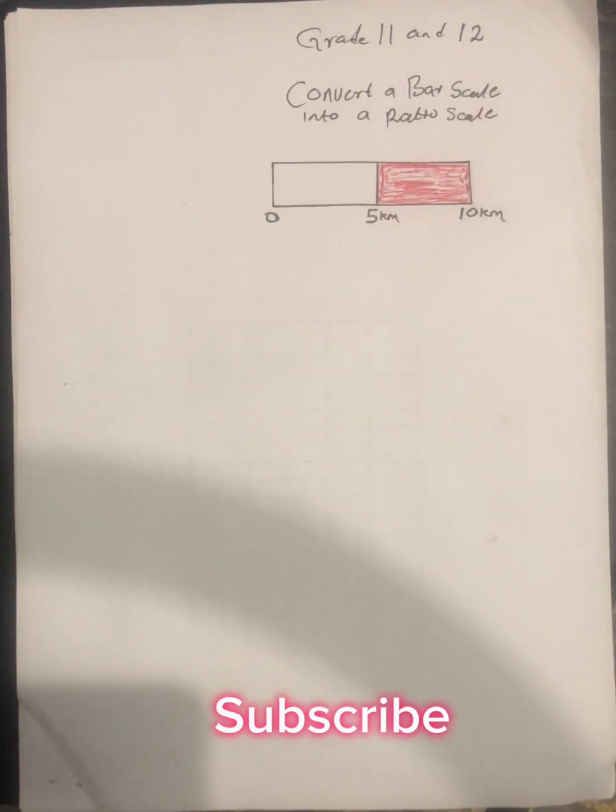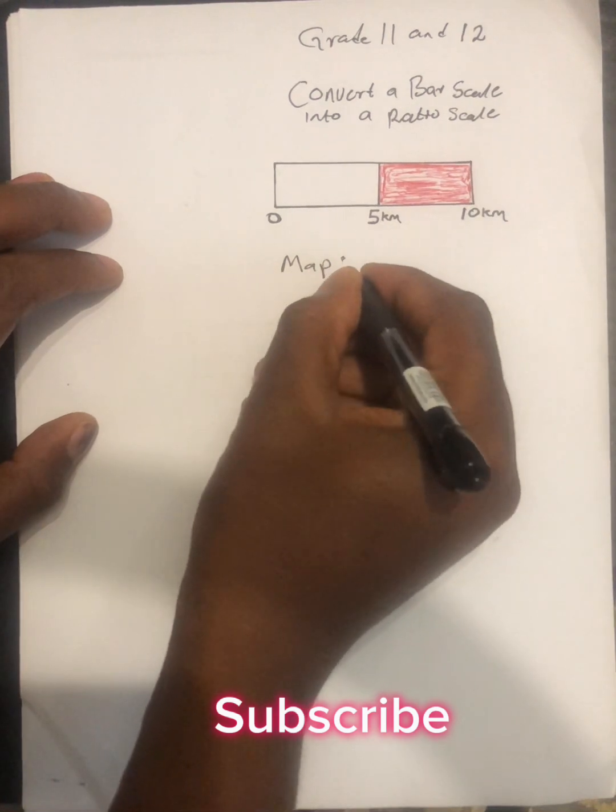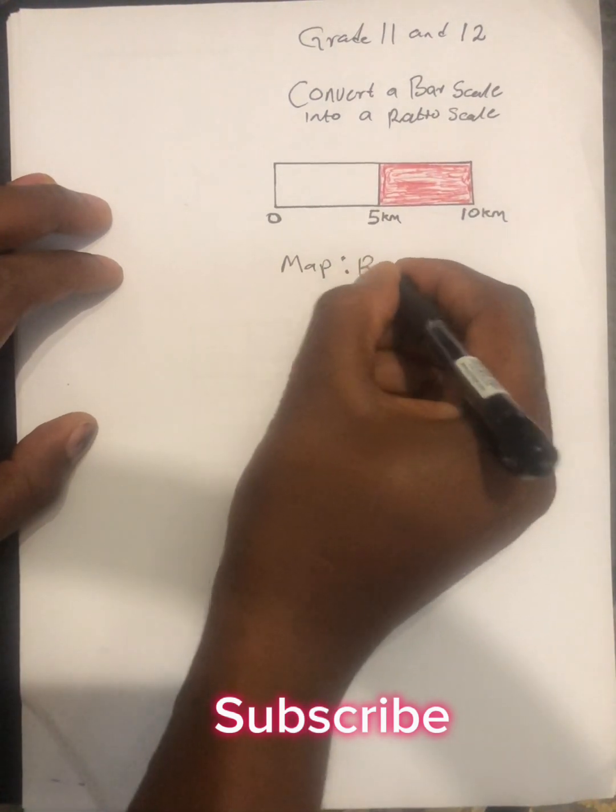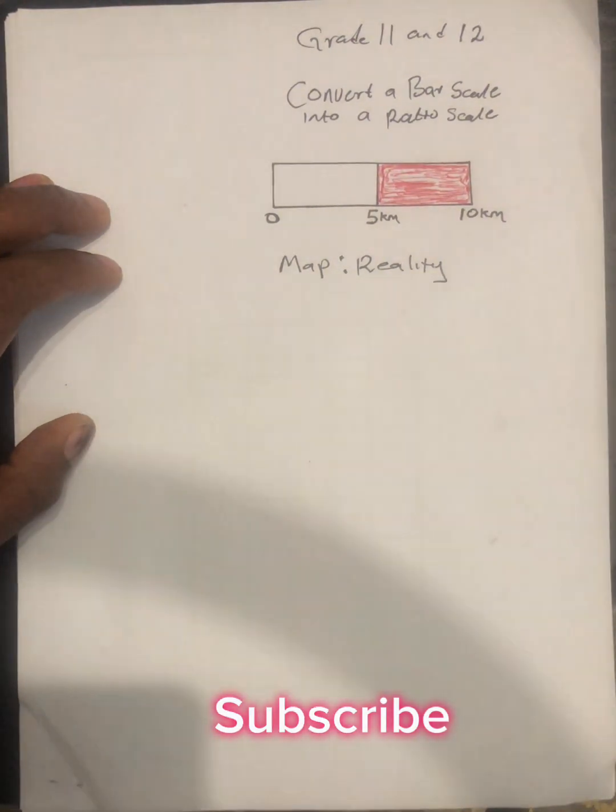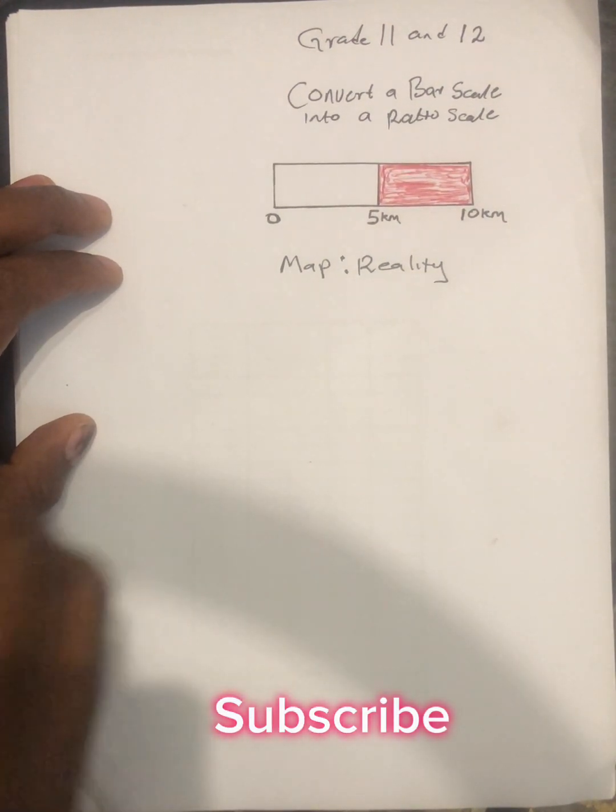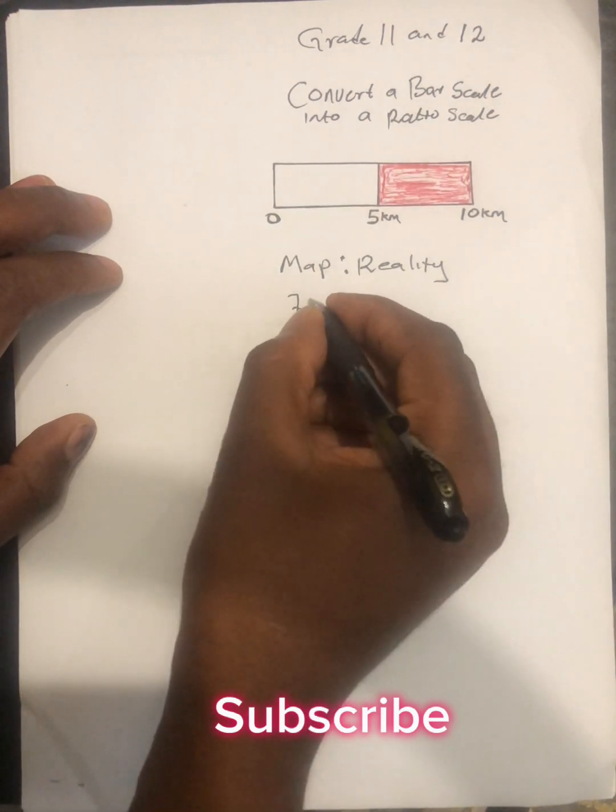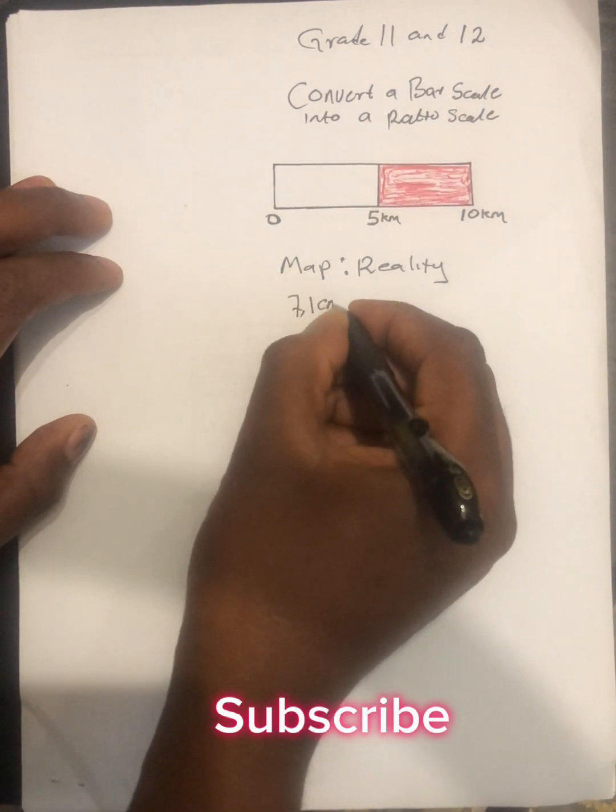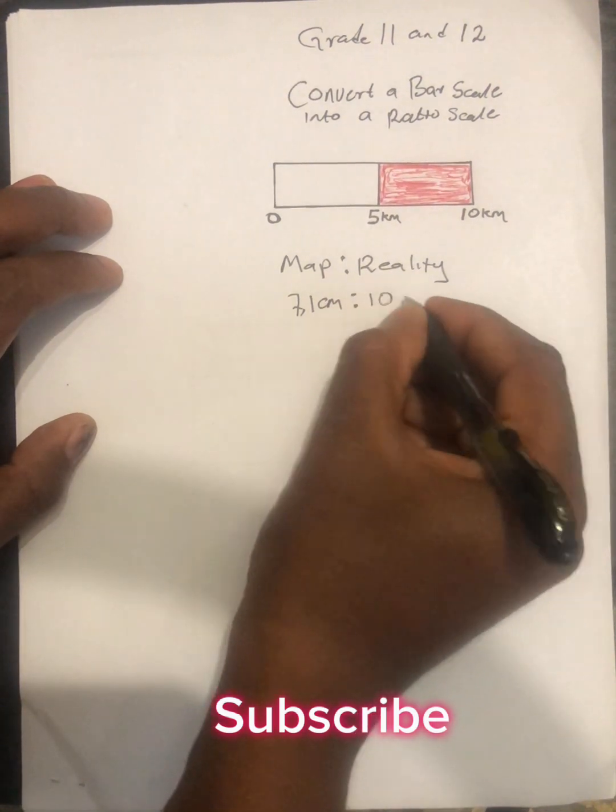We are saying that a map is to reality. Map is to reality when we use a ruler on the map. We find that the bar scale is 7.1, 7.1 centimeters. Then the real distance is 10 kilometers.